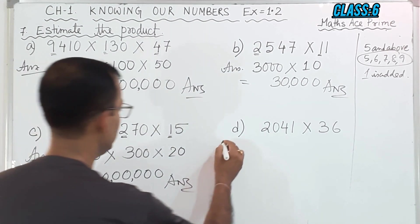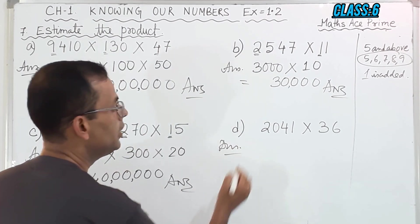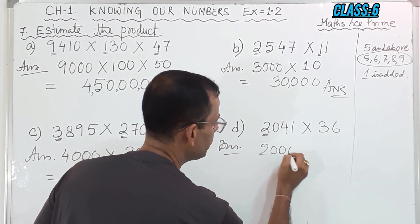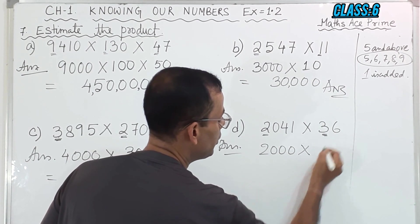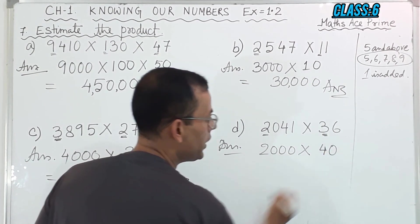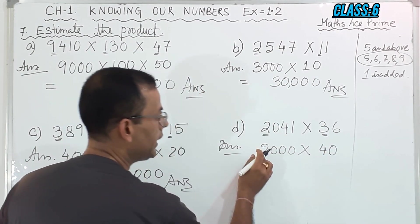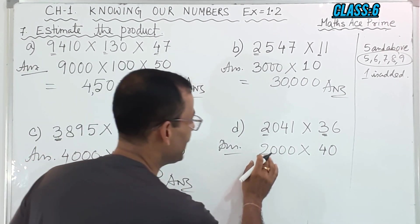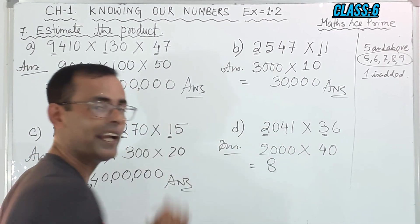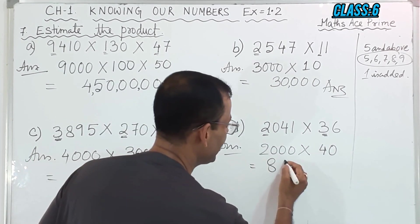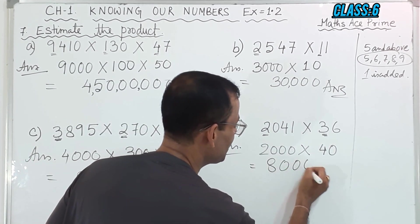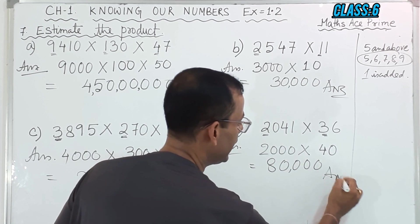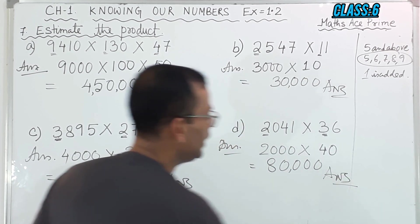Now for answer D: we will round off here and it will become 2,000. Then if I want to round off here, this will become 40. Now we will multiply: 2 into 4 is 8. There are 4 zeros — 1, 2, 3, 4. Now put the comma, and this is the answer.